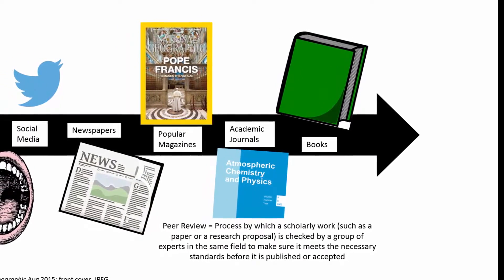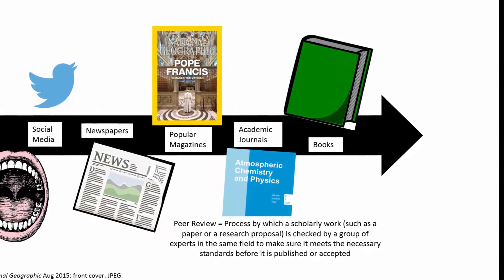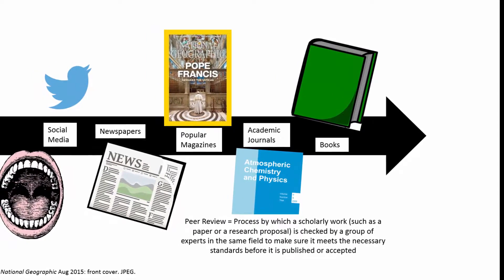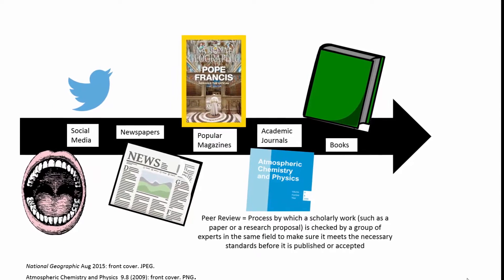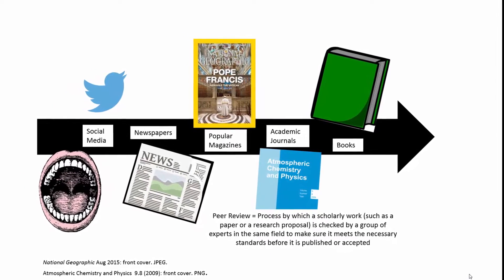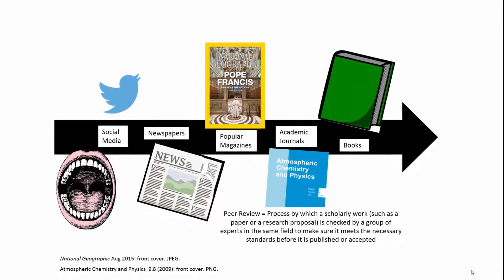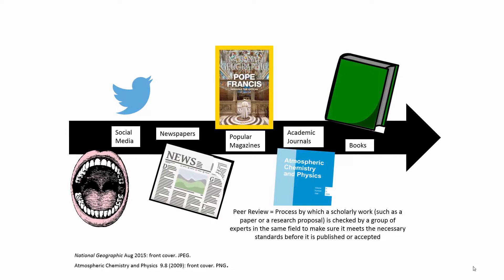For example, if your instructor requires peer-reviewed sources, don't choose a topic so recent it won't yet be covered in academic journals. On the other hand, if your topic is very recent, the information timeline indicates that newspapers and magazines are the formats most likely to yield good results.